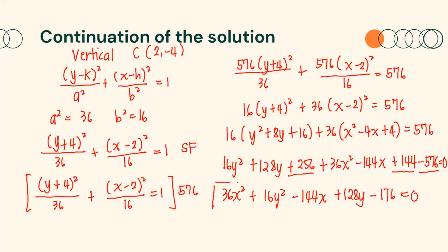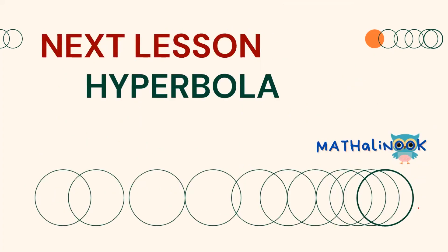Therefore, this is our equation in general form: 36x² + 16y² − 144x + 128y − 176 = 0. I hope that you have understood this lesson. For the next video, we will discuss about the hyperbola. Thank you for listening and see you on our next discussion.